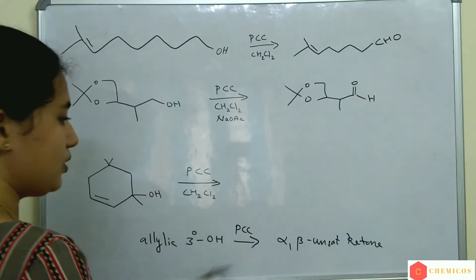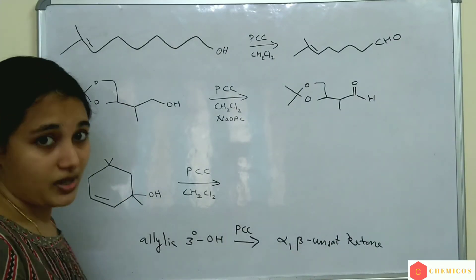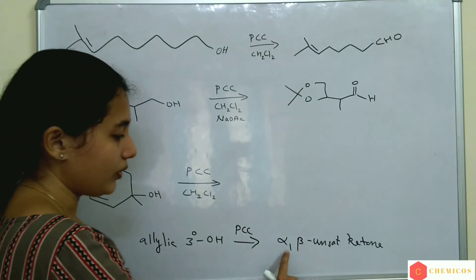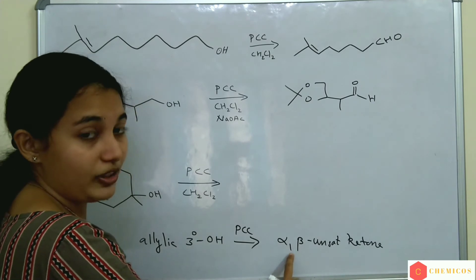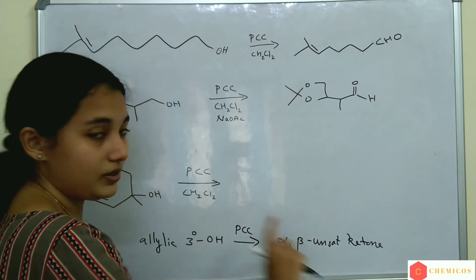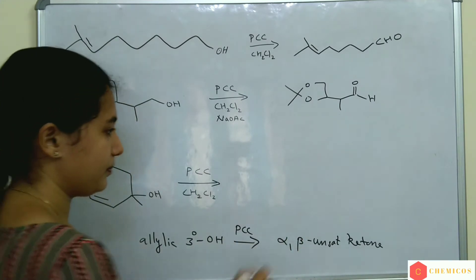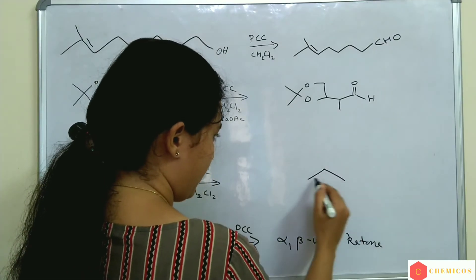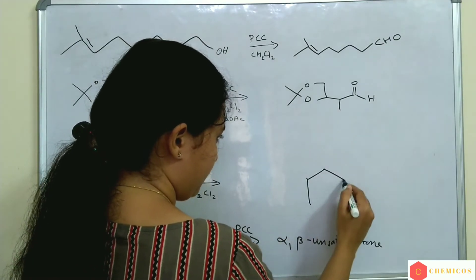So what is an alpha-beta unsaturated ketone? The alpha carbon and the beta carbon have a double bond in between them — that is an alpha-beta unsaturated compound.